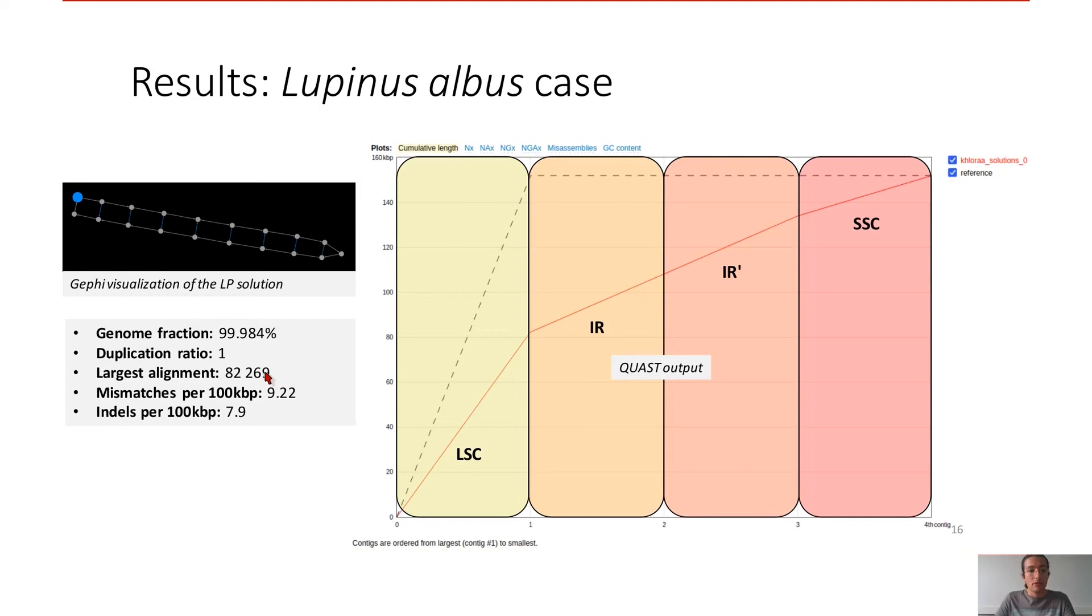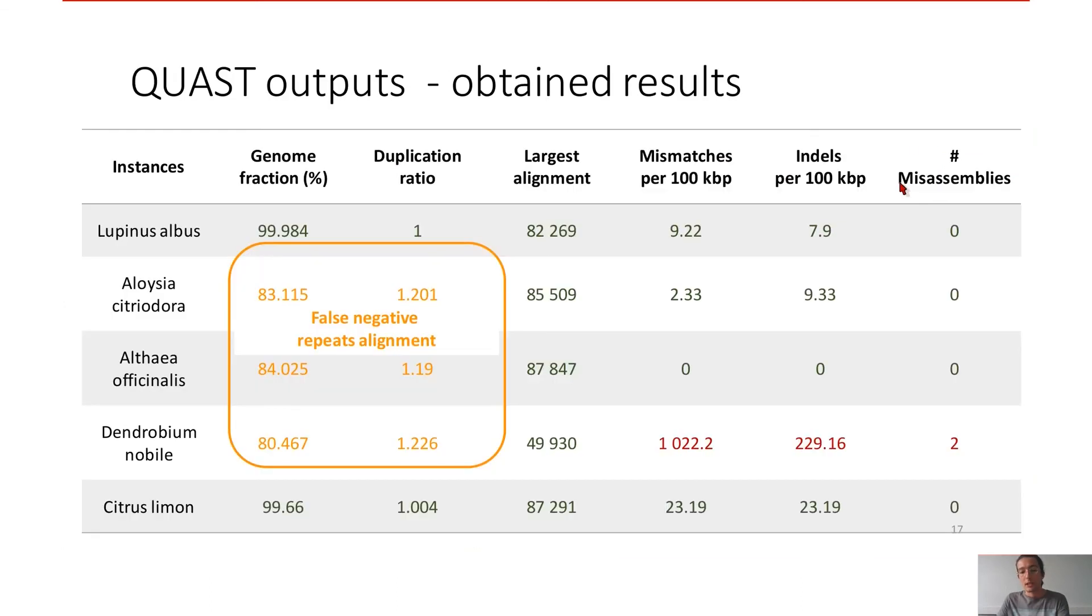Quast gives us a very great genome fraction, so how our contigs cover the reference. Over 99.9%, we have a duplication ratio equals to one, and a very low mismatches on the index ratio. So you can see here the four regions, four contigs for four regions. If you sum the length, you have approximately the length of the reference.